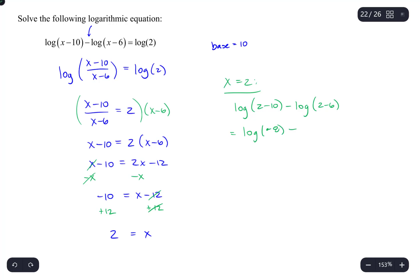And 2 minus 10 is negative 8, which is a problem. And 2 minus 6 is negative 4, which is also a problem.